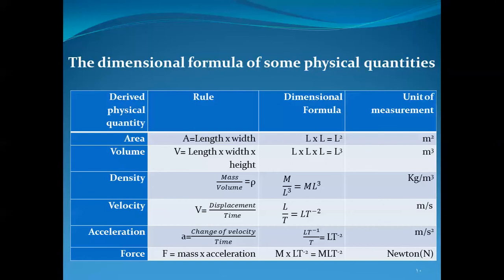Acceleration equals change in velocity over time. The dimension of velocity is L·T⁻¹, divided by T, giving the dimensional formula of acceleration as L·T to the power negative two. The unit is meter per second squared.